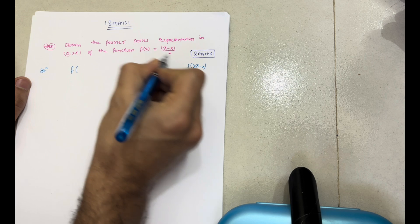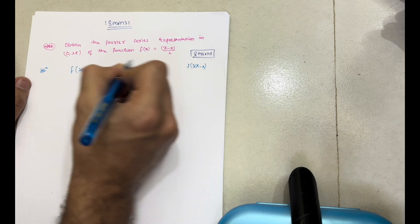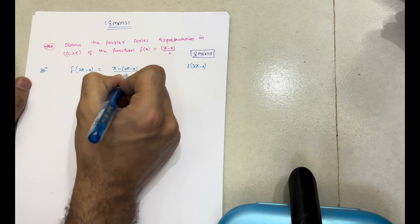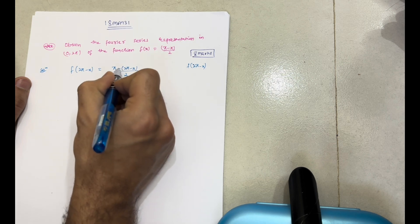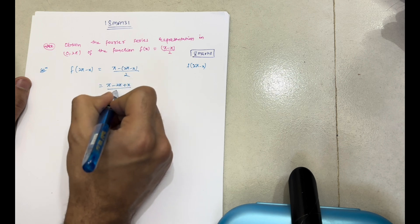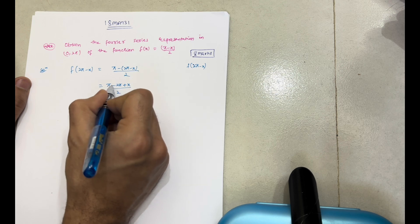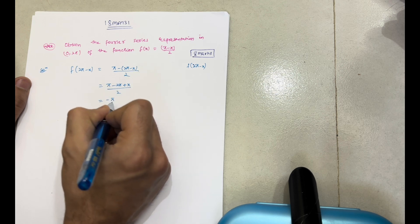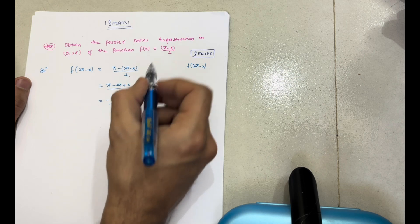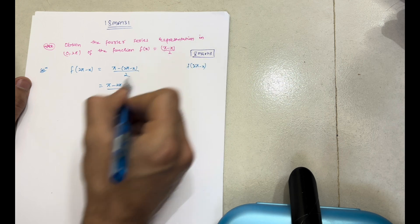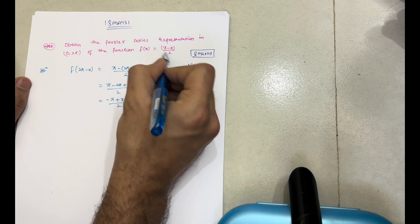Let me check it. Put x = 2π - x: f(2π - x) = (π - (2π - x))/2 = (π - 2π + x)/2 = (-π + x)/2. Now observe the given function: it has positive π and negative x, whereas the result has negative π and positive x. So it is totally the opposite of the original function.